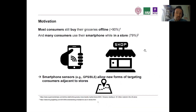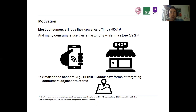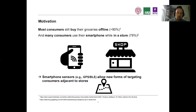The context of our study is offline retailing. Even post-COVID, the vast majority of consumers is still buying offline in grocery stores. At the same time, a lot of consumers are using their smartphones while being in a store to look up information such as discounts, distances, and other product information. The underlying functionalities of smartphones, including sensors which allow us to tap into location information based on GPS and Bluetooth low energy, essentially allow new forms of targeting consumers adjacent to stores, which in theory gives retailers some power back in terms of targeting technology that was just a privilege for their online competitors.